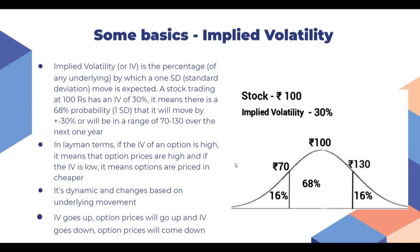In layman terms, if the IV of an option is high it means that the option prices are high, and if the IV is low it means that the options are priced cheaper. IV is dynamic and keeps changing based on underlying movement. Today a stock might have an IV of 30; tomorrow if there is any news the IV might go up to 35. The basic rule is: if IV goes up, option prices go up, and if IVs come down, option prices come down, assuming all other factors are constant.